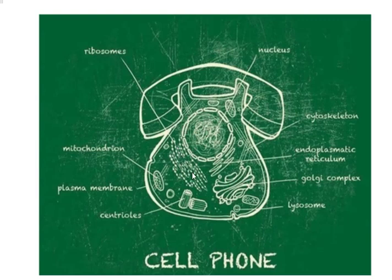You have the ribosomes on the rough endoplasmic reticulum, mitochondria, and the plasma membrane. Here's the Golgi apparatus blebbing off and making vesicles. You have smooth endoplasmic reticulum. And you have the cytoskeleton — we didn't really talk about that before. You have all these proteins holding the cell in shape. I look at it like a tent: without the poles, it would just lay flat on the ground. We need those proteins to give shape to the cell.